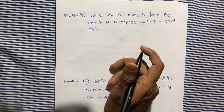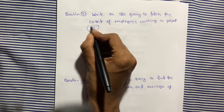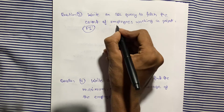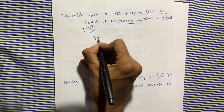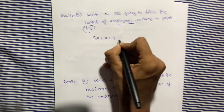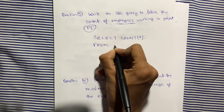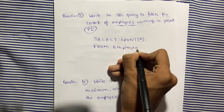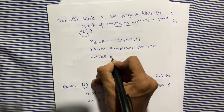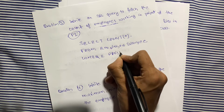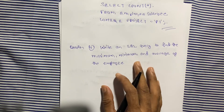The third question is: write an SQL query to fetch the count of employees working in project P1. The condition is where project equals P1, and we want the count of how many employees are working on P1. The query is: SELECT COUNT(*) FROM employee_salary WHERE project = 'P1'. This is our third query.